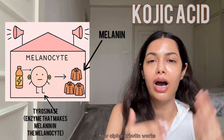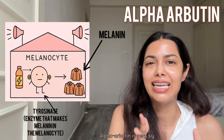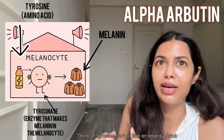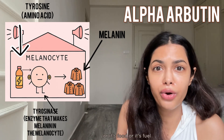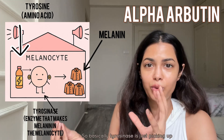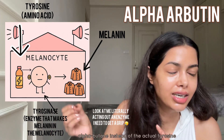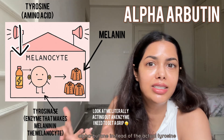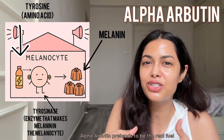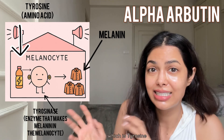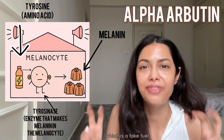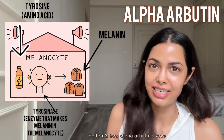If we go into how alpha arbutin works — alpha arbutin is very sly. Think of it like stealth. Tyrosinase needs tyrosine. Think of tyrosine like an energy drink, its food, its fuel. What alpha arbutin does is it pretends to be tyrosine. Tyrosinase ends up picking up alpha arbutin instead of the actual tyrosine — it's like consuming fake food. Alpha arbutin pretends to be the real fuel which is tyrosine, but instead tyrosinase is consuming alpha arbutin, which is a fake fuel. That's how alpha arbutin works.